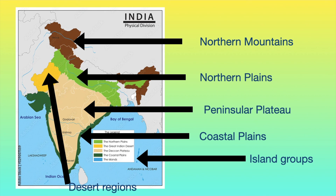Physical divisions of India: the northern mountains on top, below that the northern plains, then the peninsular plateau which is the largest area. You also have the eastern and western coastal plains, the island groups, and the desert regions — the Thar desert in the northwest.